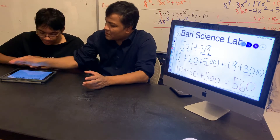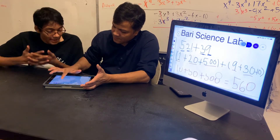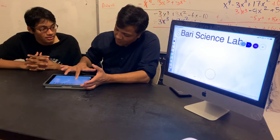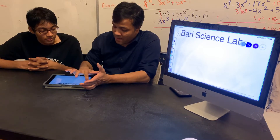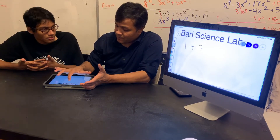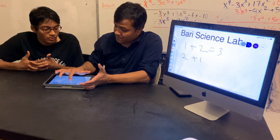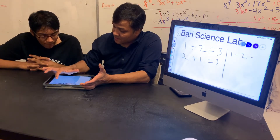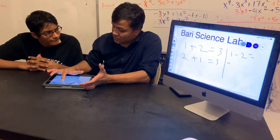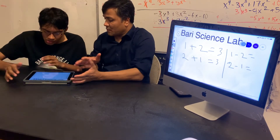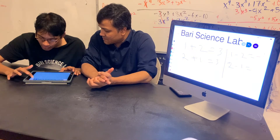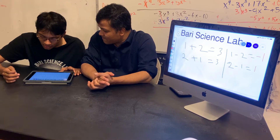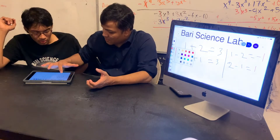Now let's do subtraction. Is subtraction a commutative property or not? It has to be. Really? Let's see: one plus two is three, and two plus one is three — addition is commutative. Now one minus two is negative one, and two minus one is one. So this one is commutative, but this is not a commutative property because these are not the same.